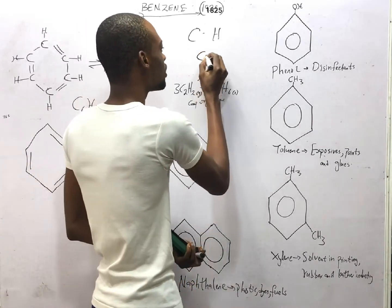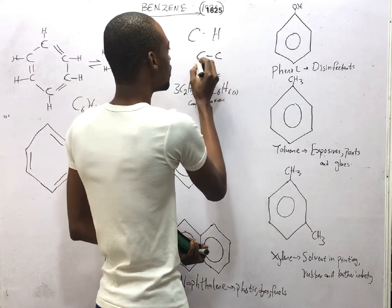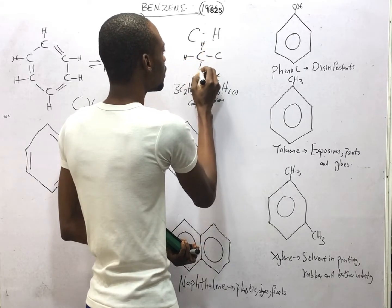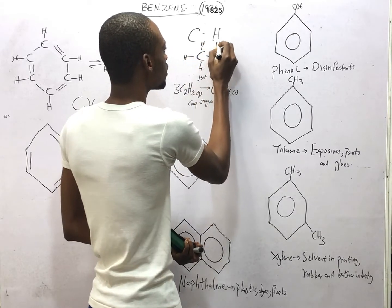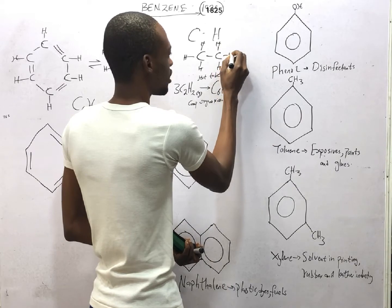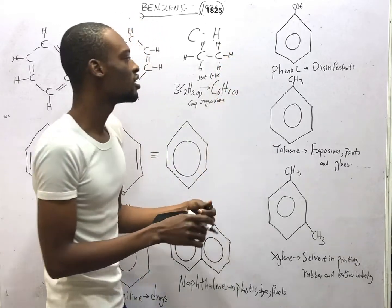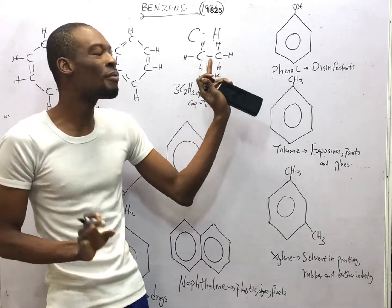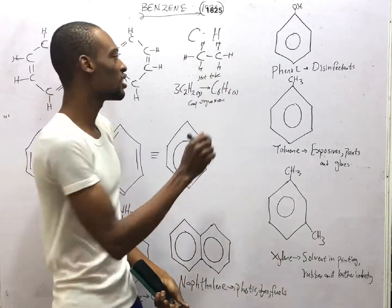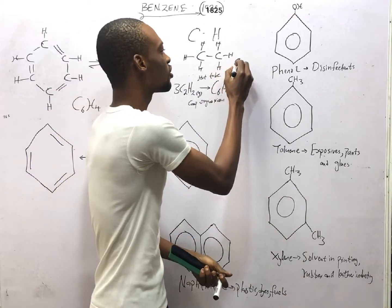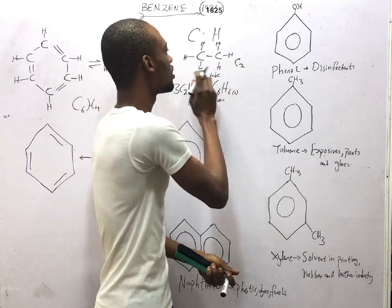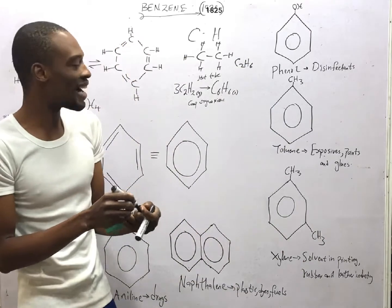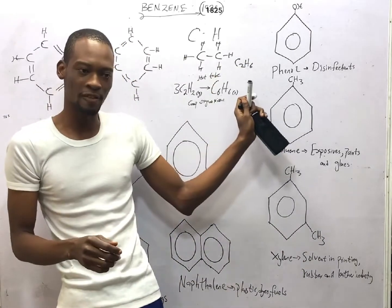For example, we can have a compound with two carbons and six hydrogens — C2H6. This compound is a hydrocarbon; it contains carbon and hydrogen alone, with two carbons and six hydrogens. This is an alkane, or ethane.